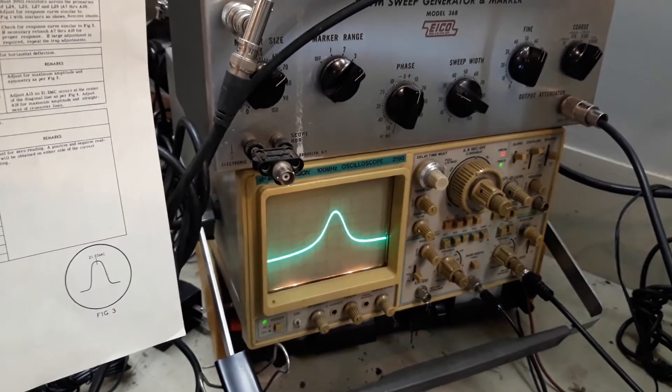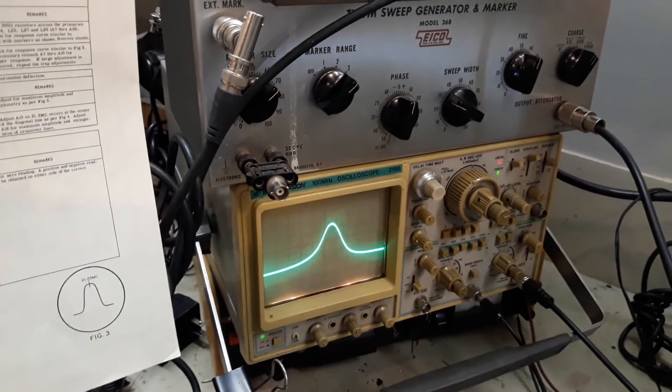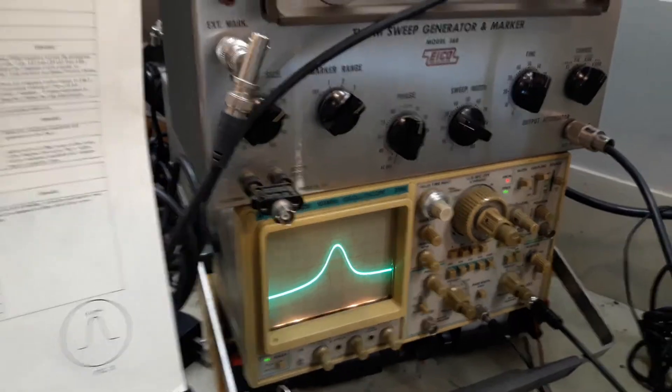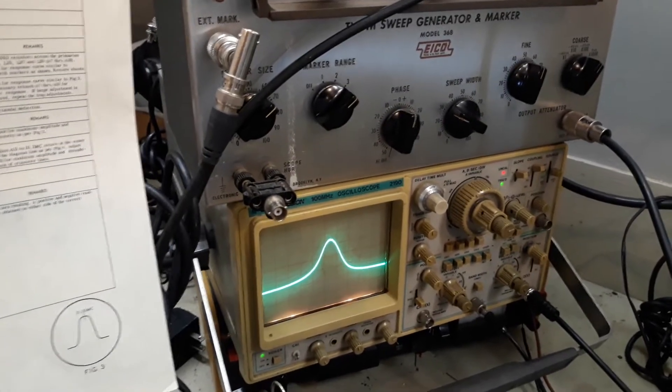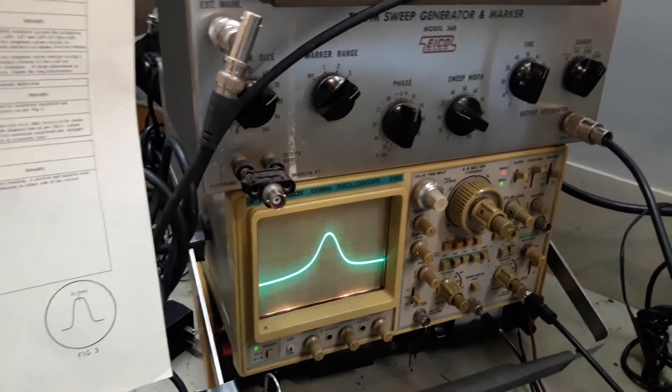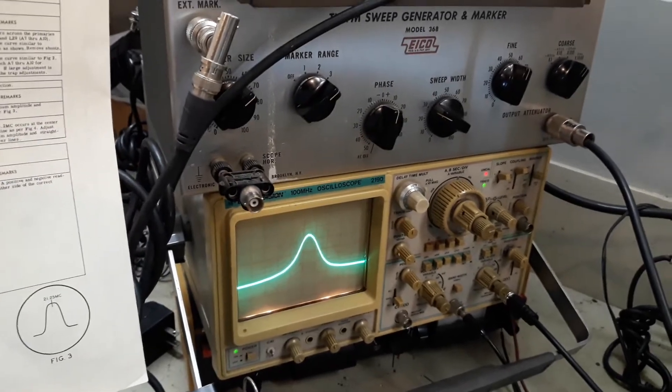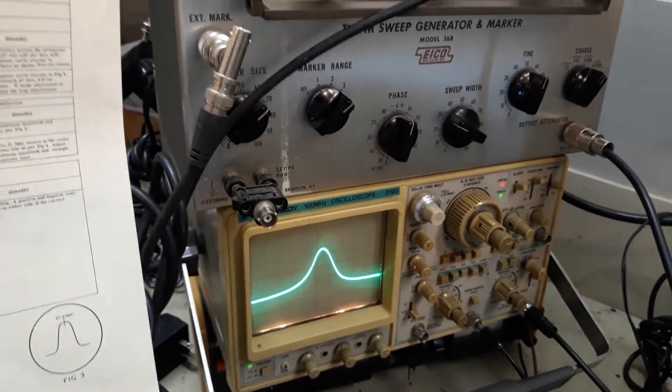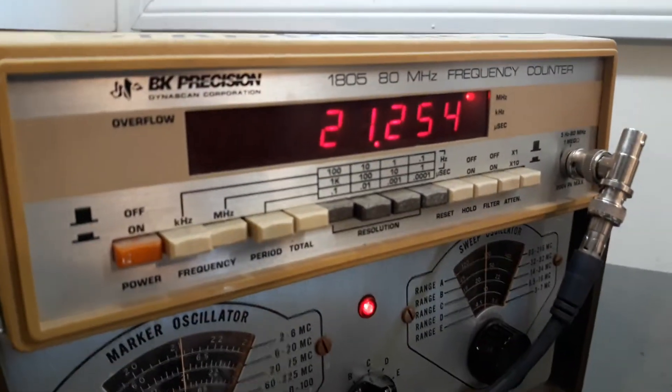Then use the sweep width to dial the curve in. In other words, the sweep width is going to be the center frequency. The center frequency is locked for sure if you have the marker frequency locked for sure.